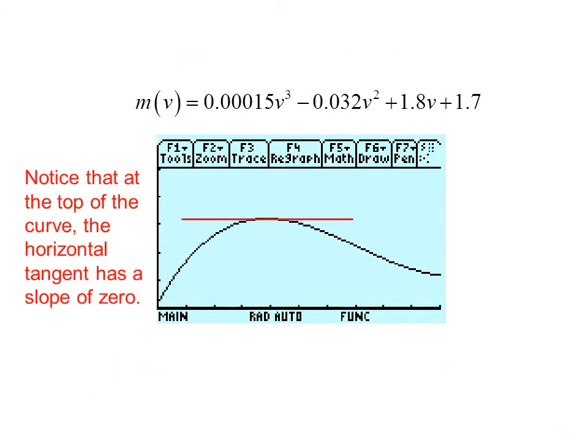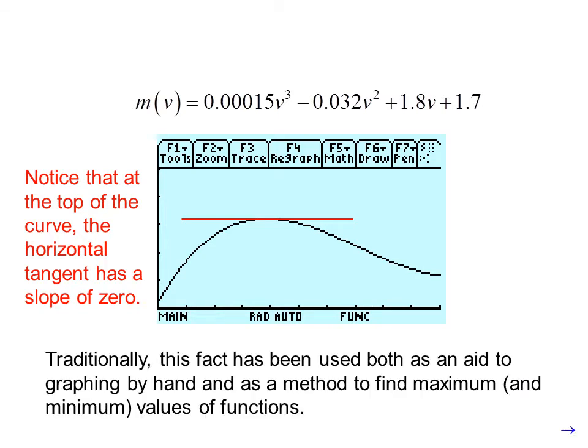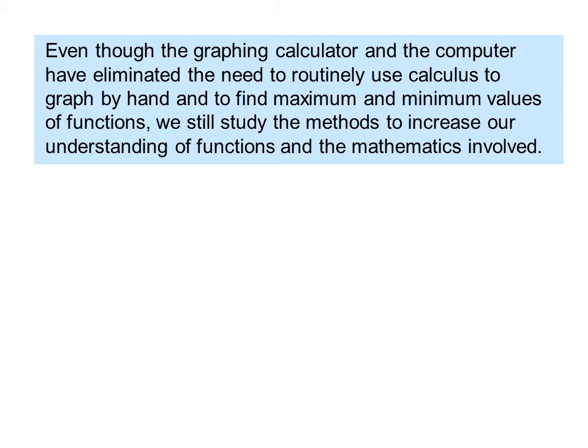Notice that at the top of the curve, the horizontal tangent has a slope of 0. Traditionally, this fact has been used both as an aid to graphing by hand and as a method to find maximum and minimum values of functions. Even though the graphing calculator and the computer have eliminated the need to routinely use calculus to graph by hand and find maximum and minimum values of functions, we still study the methods to increase our understanding of functions and the mathematics involved.